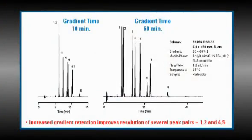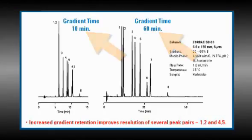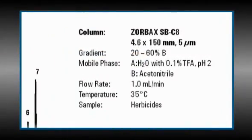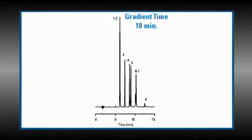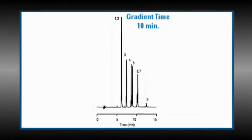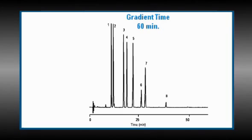To illustrate how this equation's concepts manifest themselves in your chromatography, let's look at a few examples. Here, we increased the gradient time from 10 to 60 minutes, but kept our other gradient parameters unchanged, getting the increased gradient retention we expect from our equation and giving us a significant improvement in overall gradient resolution. The longer gradient time results in a shallower gradient, and by decreasing the gradient steepness, we're able to separate peaks 1 and 2 and 6 and 7.